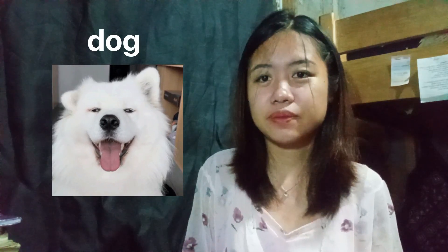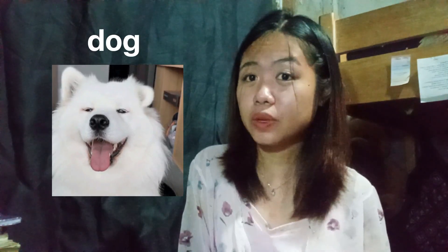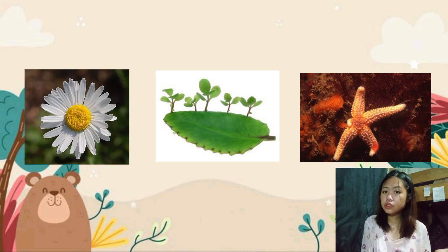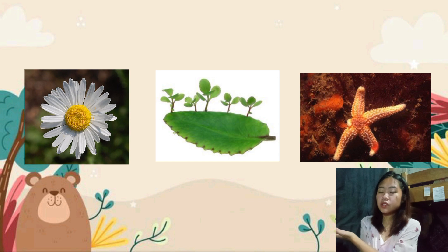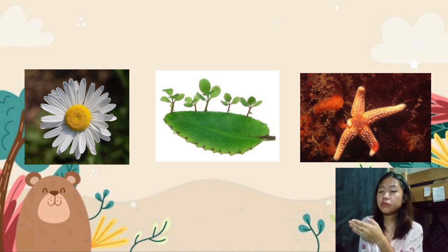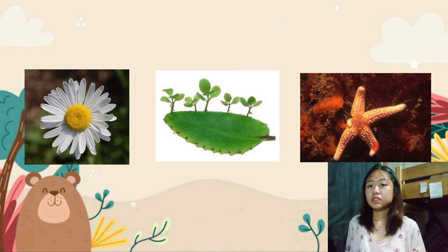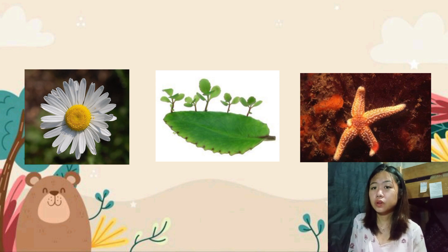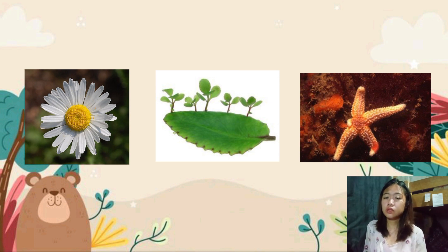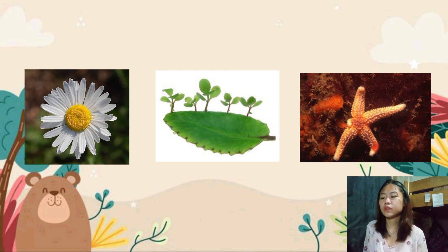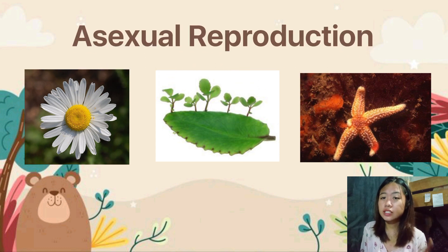I'll give you three seconds to think of an example. Save your answers for later. Now, I have here another set of pictures. In the first picture, we see a flower. The second one is a leaf with fragments growing on its outside part. The third picture is a starfish which lost two legs but still grows over time — there's no problem if it loses its legs because they will still grow. That is an example of asexual reproduction.